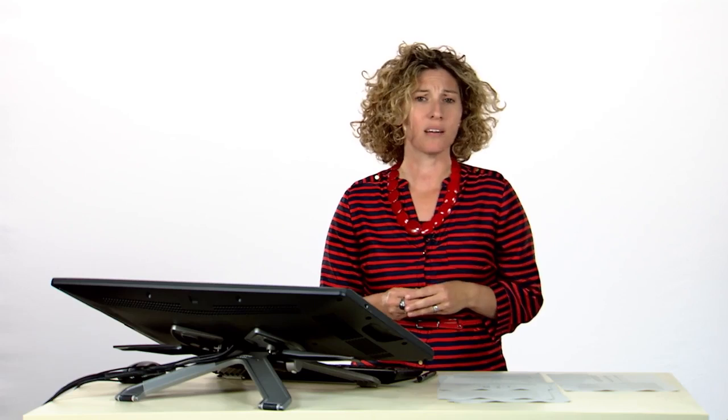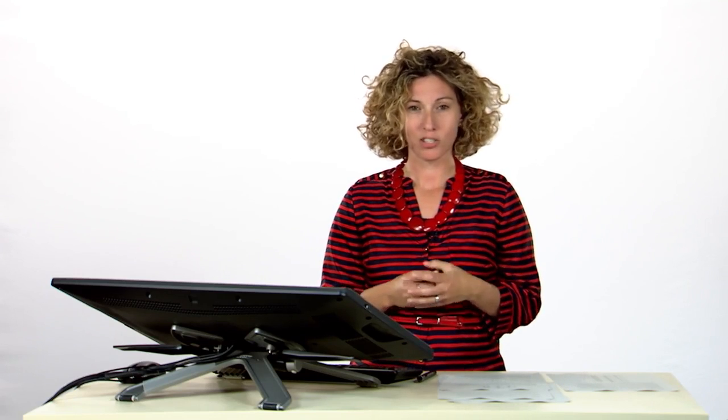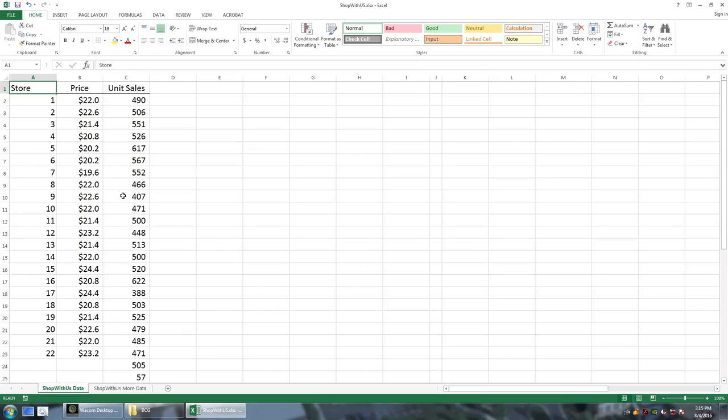Once you have the data, you can start digging deeper and understanding what affects the units sold. To do this, let's take a closer look at the data. In front of us in Excel, we can see the information that we've collected. We can see here that we have 22 stores. We have the prices that were set to our pack of 36 rolls of toilet paper. And we can see the unit sales in each one of those stores during this week.